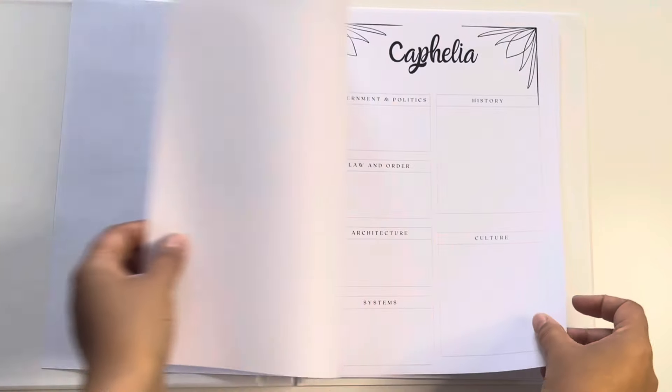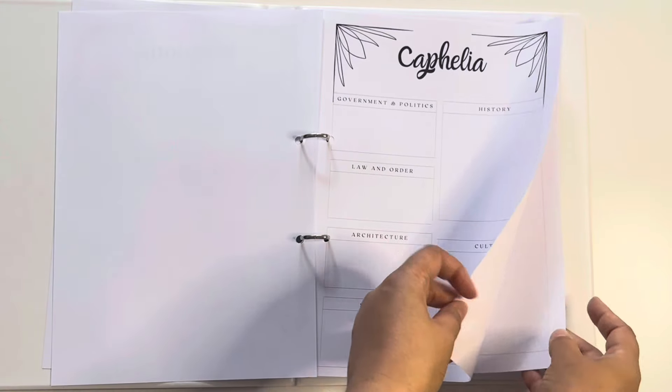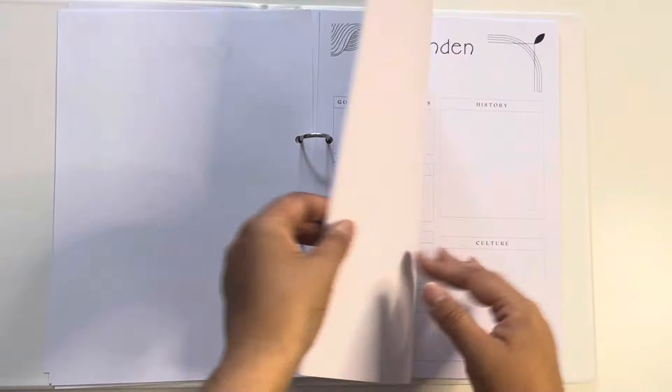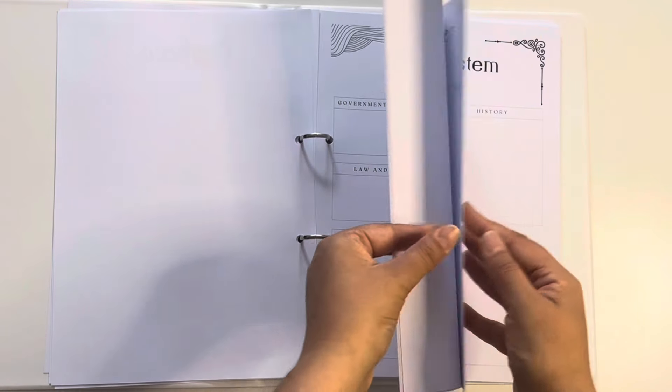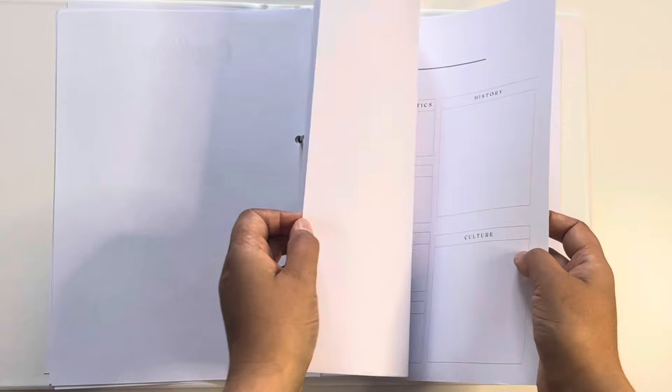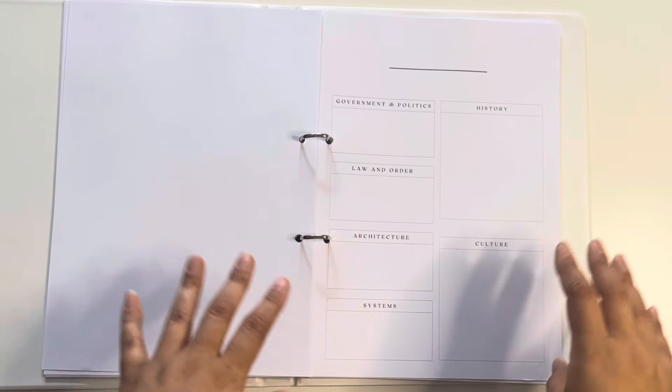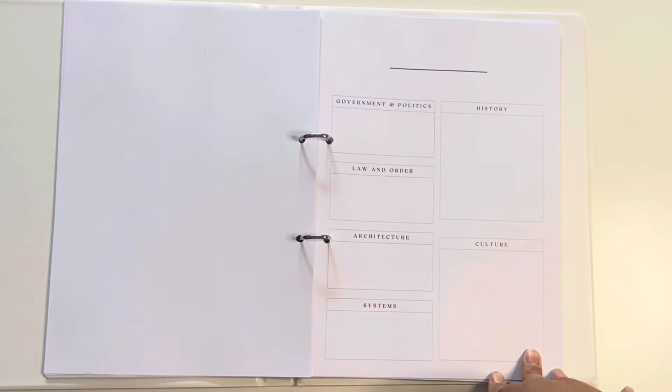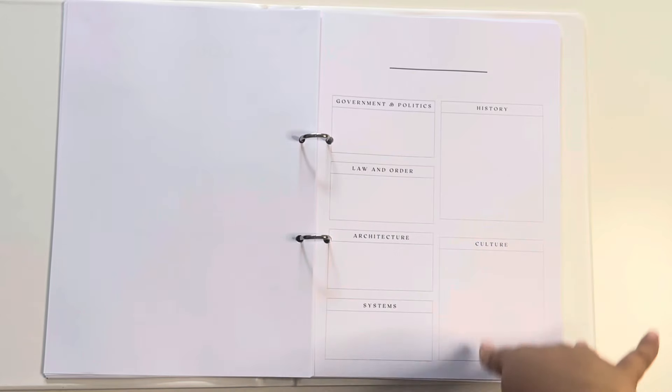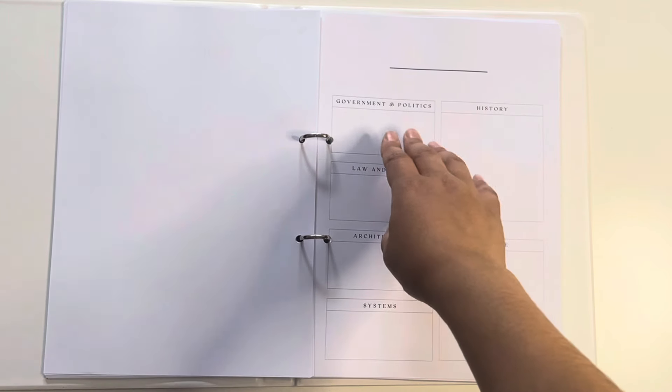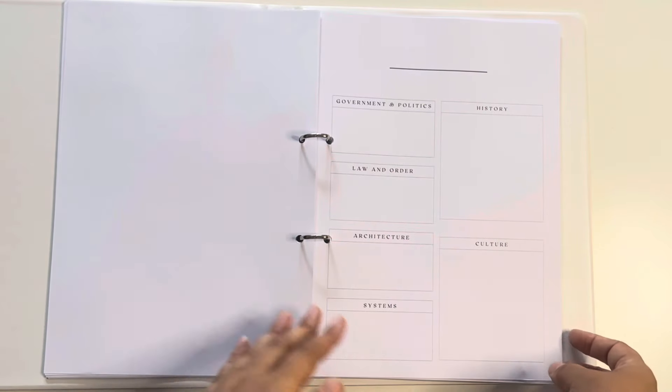These are very specifically for Project Grey itself. I made it look pretty, but we'll come to my blank one. And this is everything that I'm going to be writing down and noting for world building. So government and politics, law and order, architecture, et cetera.